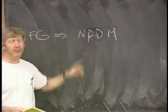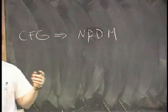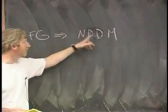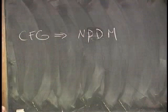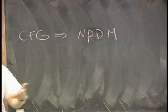If you have a context-free grammar, you can come up with a non-deterministic pushdown machine. And vice versa, if you have a non-deterministic pushdown machine, you can come up with a context-free grammar. And that equivalence is a fundamental pillar of this level.